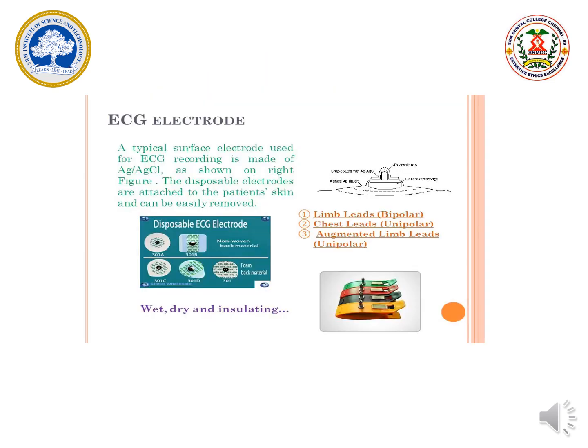A typical surface electrode used for ECG recording is made up of Ag and AgCl, as shown in the figure. Augmented limb leads and chest leads are unipolar. These disposable electrodes are attached to the patient's skin and can be easily removed.